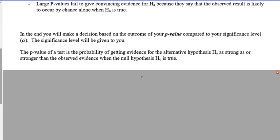So if you don't have a strong p-value, you're going to reject the H0. And large p-values fail to give convincing evidence for the Ha in support of the H0. In the end, you'll make a decision based on the outcome of your p-value compared to your significance level. This looks like kind of a funny looking egg. Okay? It's the alpha. The significance level will be given to you. For right now, it's going to tell you what it is. Later on, you're going to learn how to calculate it. I'll tell you right now that a very popular significance level is 0.05. That's a very common one.